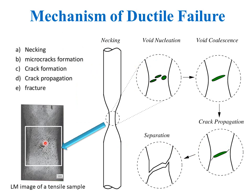In ductile failure, the sample starts to fracture due to the formation of micro-voids in the necked region. These micro-voids grow in size and begin to join together and coalesce to produce an internal crack. The final separation of the cross-section occurs by shear rupture. In ductile failure there is absorption of a massive amount of energy, so crack propagation occurs very slowly before fracture. This is why plastic deformation occurs at a very high strain value — the material undergoes large deformation before failing.